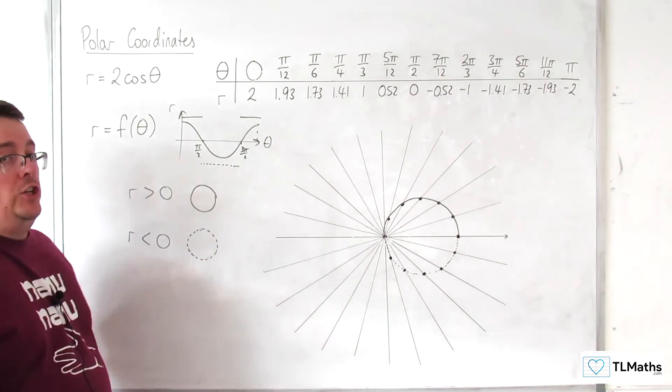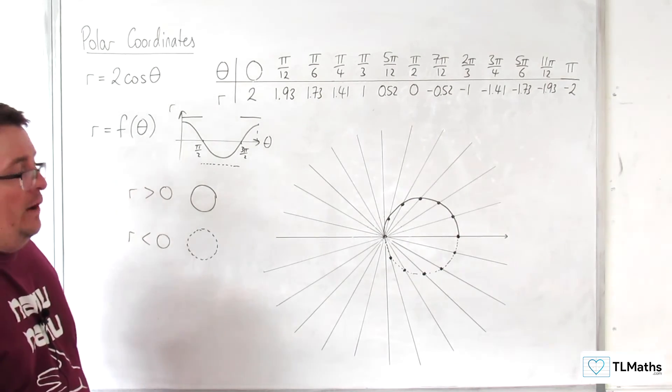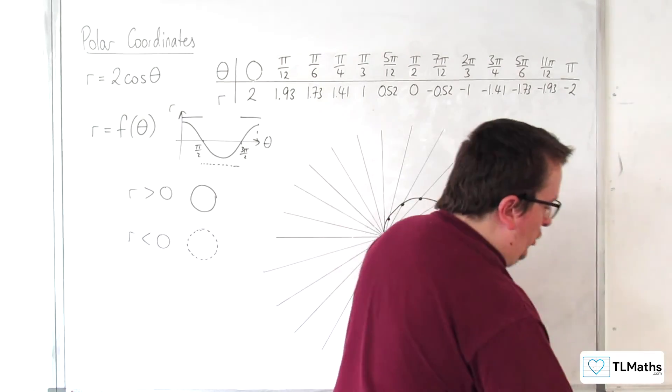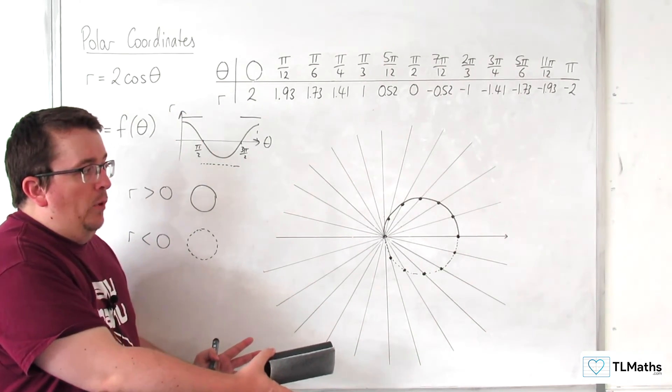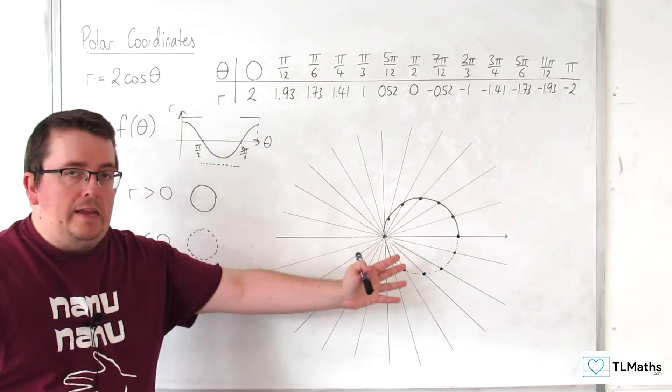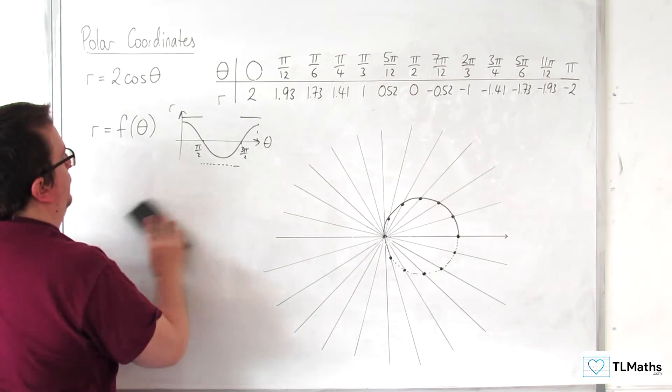And what we found is that actually here we've got a circle. Now we can tell that it's actually a circle, because just because I've plotted the points doesn't mean this is completely accurate. So I've done a lot of this freehand.